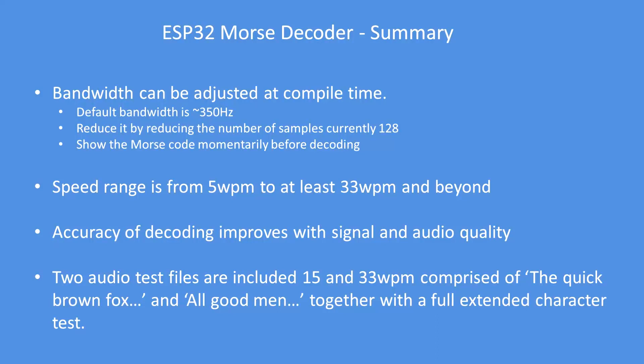The speed range is very wide. I have tested it beyond 33 words per minute, but I've tested at 5 and that works fine. Accuracy of decoding usually improves with audio quality. HF Morse code can be very noisy but it still copes with that.